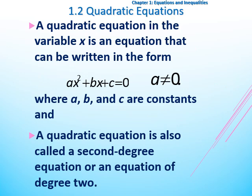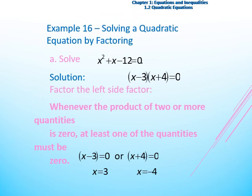Now let's move to the second section in chapter 1, which is quadratic equations. The quadratic equation in the variable x is an equation that can be written in the form ax squared plus bx plus c equal to 0, where a is not equal to 0, and a, b, and c are constants. The quadratic equation can also be called a second-degree equation or an equation with degree 2. Note that the greatest power in the quadratic equation is 2, and we have two solutions.